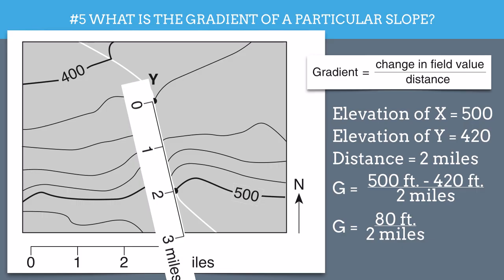You can simplify. 80 feet divided by 2 miles. And you get an answer of 40 feet per mile.